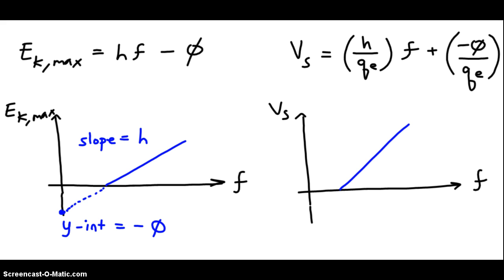We can extrapolate the line down. The y-intercept, in this case, is going to be negative phi over charge of an electron. And we can see that, of course, easily by comparing to y equals mx plus y-intercept.